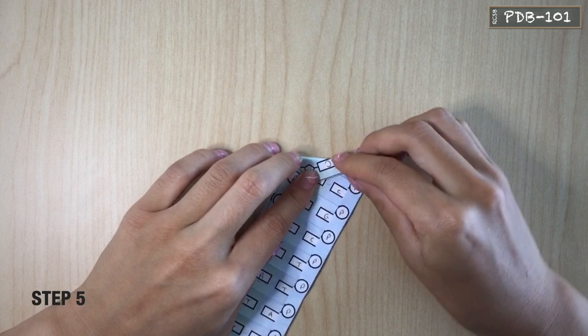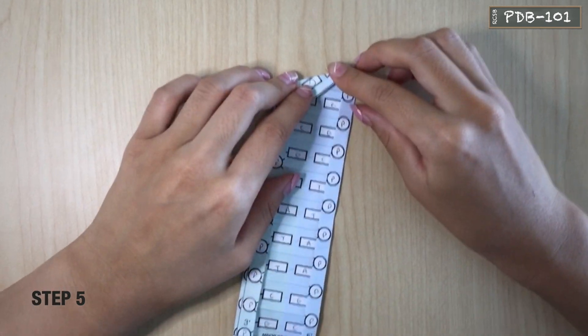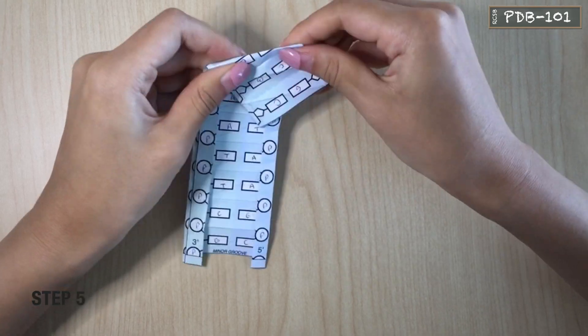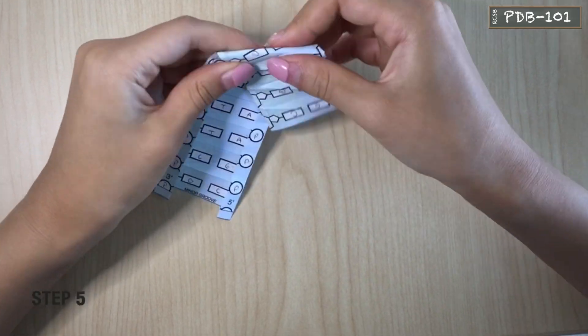One good way to do it is to crease all of the horizontal lines, then flip the model over and crease all of the diagonal lines. The result should look sort of like a paper fan.